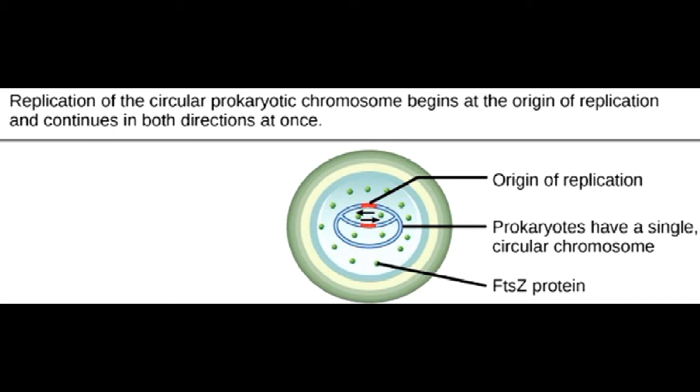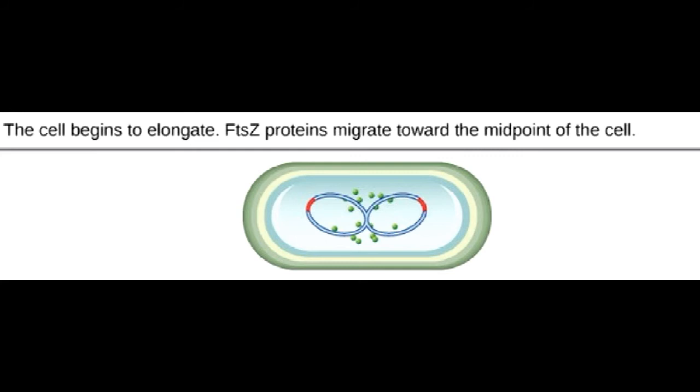Replication of the DNA is bidirectional, moving away from the origin on both strands of the loop simultaneously. As the new double strands are formed, each origin point moves away from the cell wall attachment toward the opposite ends of the cell.